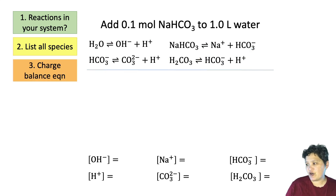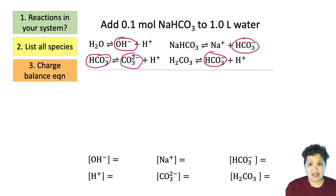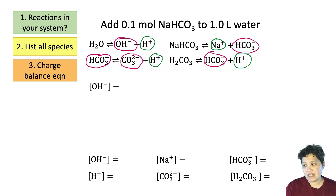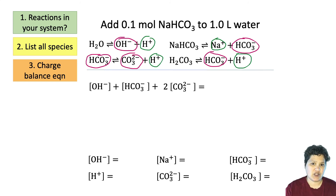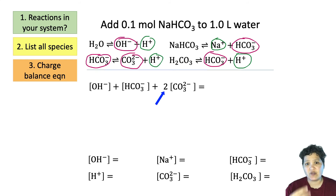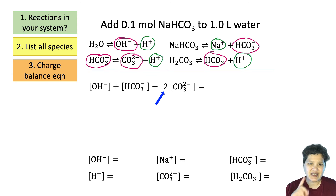Let's write our charge balance equation. We put all negatively charged species on one side: OH⁻, bicarbonate, and carbonate — three negatively charged species. One thing that's different from last time is that carbonate has a minus two charge. So we need to multiply it by two to account for the fact that it carries twice as much negative charge as the singly charged species. That's why we have a factor of two in front of carbonate.